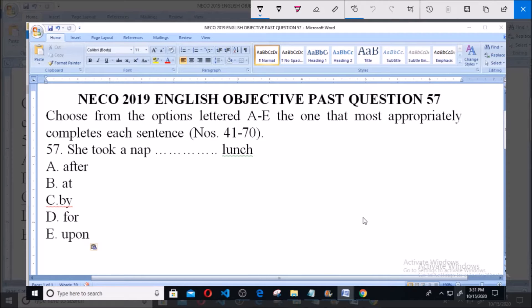Welcome. This is NECO year 2019 English objective past question, question number 57. The instructions say: choose from the options lettered A to E the one that most appropriately completes each sentence. This instruction is to